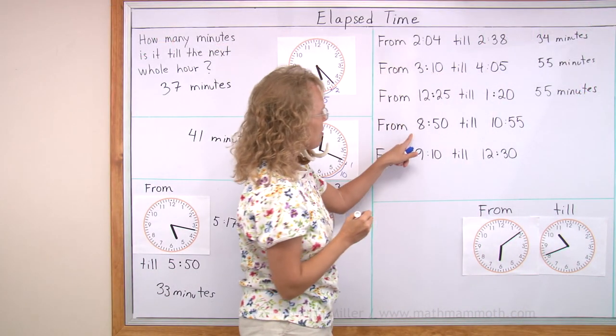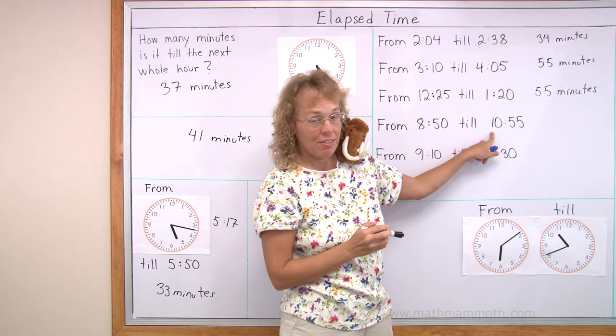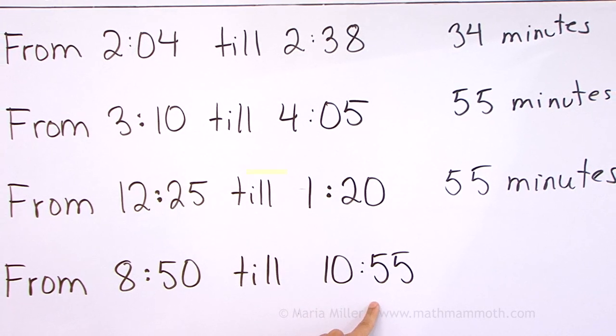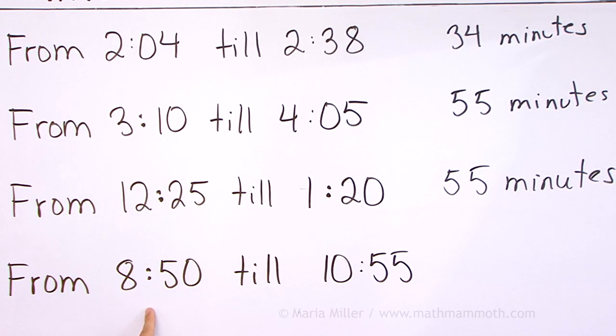From 8:50 till 10:55. Again, you can think how Matthew was thinking that if this was 10:50, we would have exactly two hours from 8:50 till 10:50. But it is five minutes more, so we get two hours, five minutes.